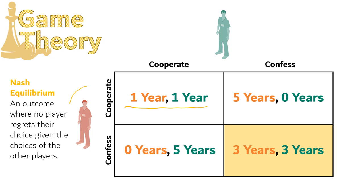Let's look first at player A. They're getting a payoff of one year. If they change their choice, they would change from cooperate to confess, and they would get zero years in prison. That means they would regret their choice — one year in prison is worse than zero years in prison. So player A would regret their choice, and right away we know this is not a Nash Equilibrium.